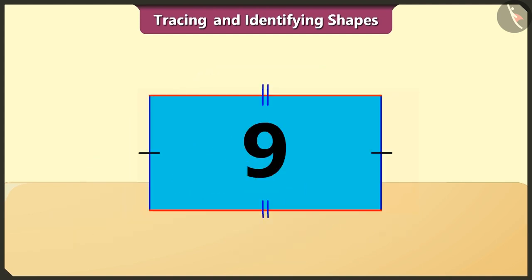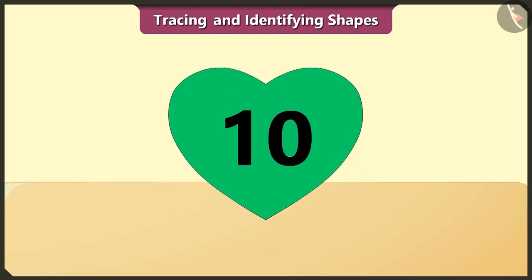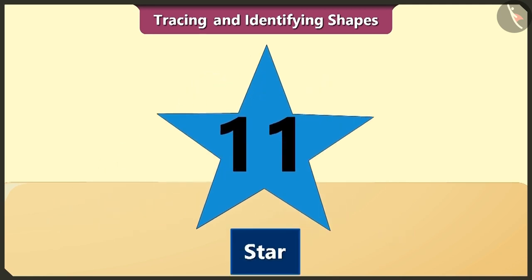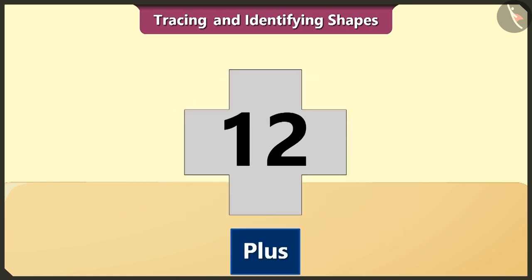And the rectangle is ninth in order here. Its opposite sides have the same length. The heart is tenth in order. The star is eleventh in order. And the plus symbol is twelfth in order.